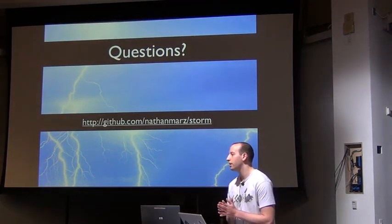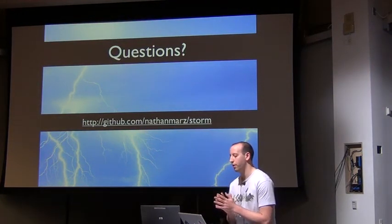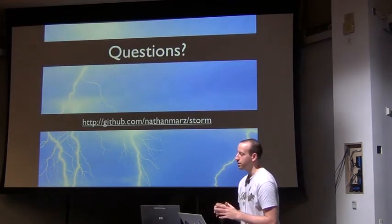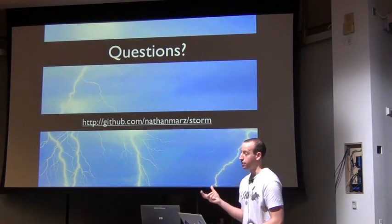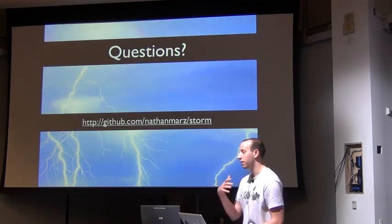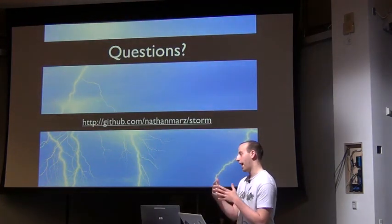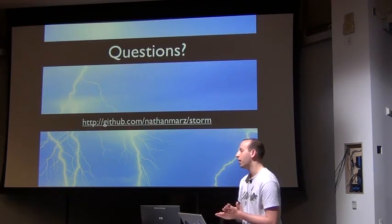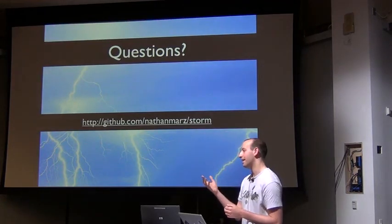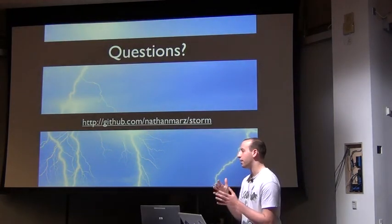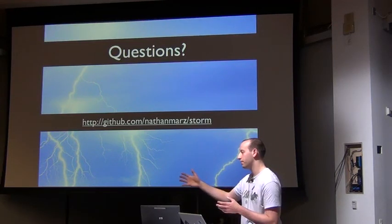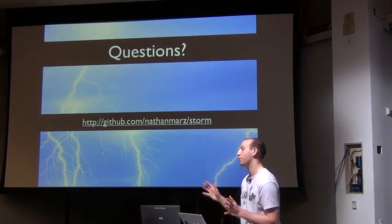Q&A — The types in tuples can be any type. Storm uses a really awesome serialization library; if you want to support having another type in tuples, you just register a serializer for it. It natively handles collections of types — for example, a map of a list of some custom type will be serialized very efficiently.